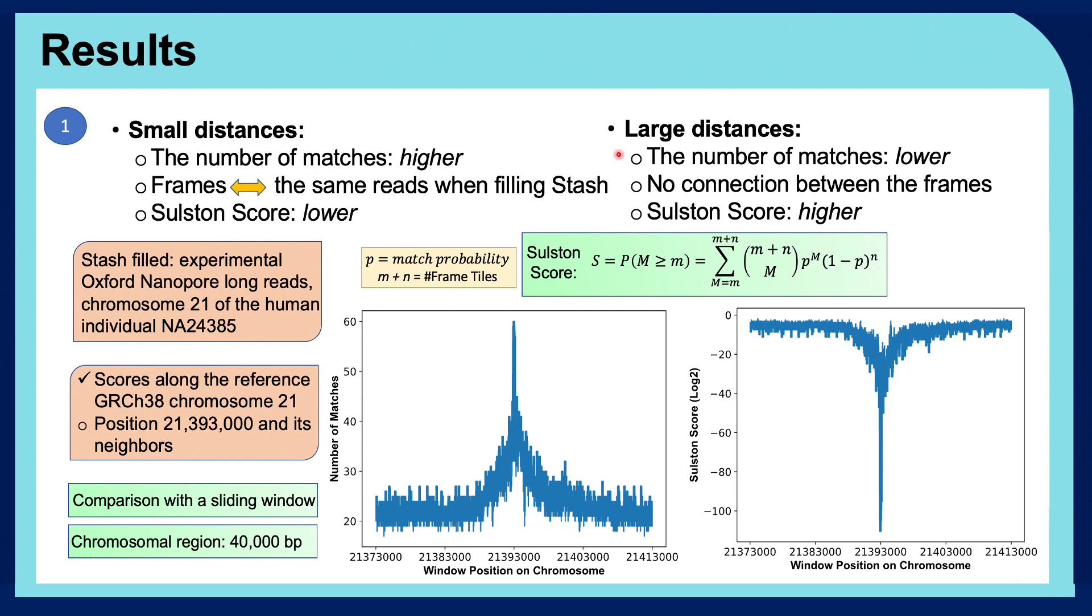On the other hand, for large distances on a genomic region, we expect the number of matches to be lower because there would be no connection between the underlying frames and the Sølsten score to be higher.